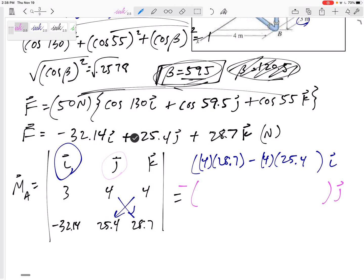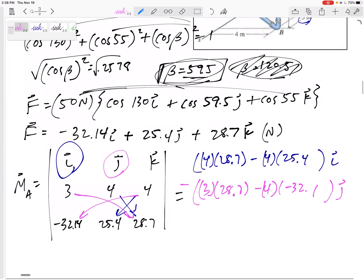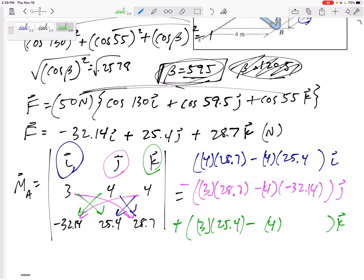That minus that three times 28.7 minus four times negative 32.14. Be very careful with these positives and negatives, right? It's minus and there's a negative and there's a negative right there. You know, lots of opportunities to make mistakes. So just don't, don't make them and you'll be good. Alright. Plus this K component and it's that minus that, right? Three times 25.4 minus four times negative 32.14. There we go.